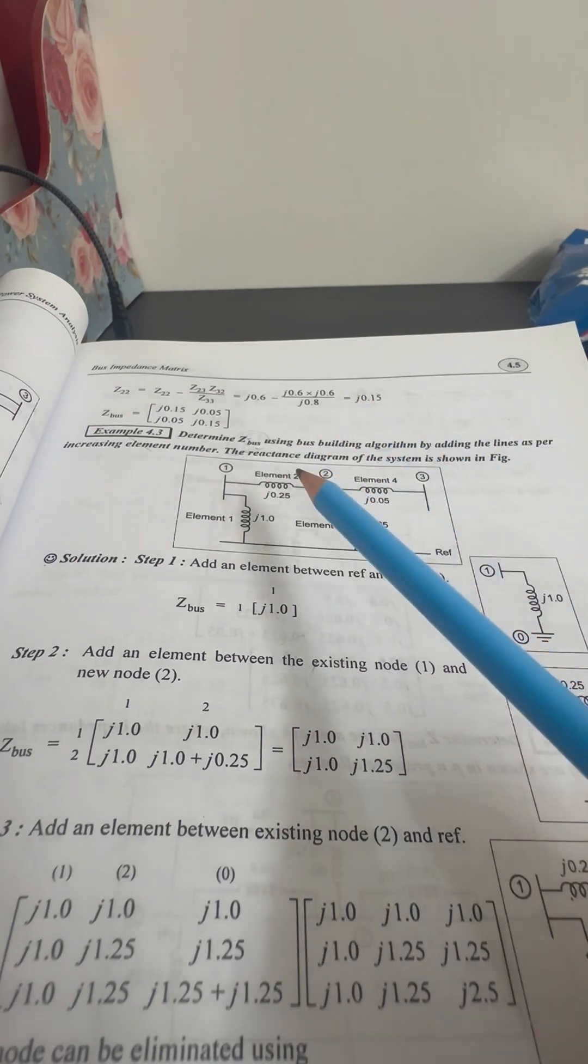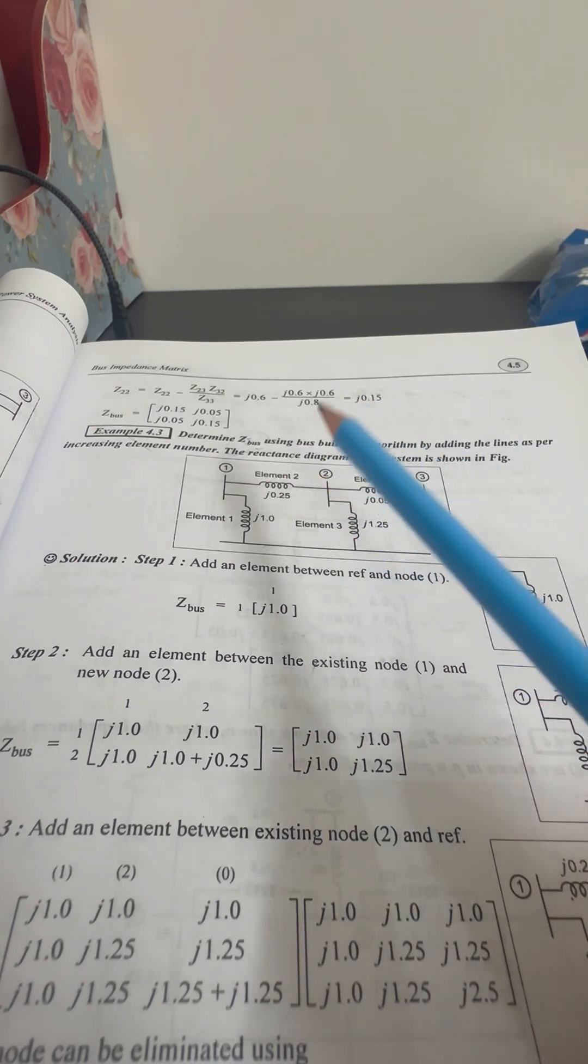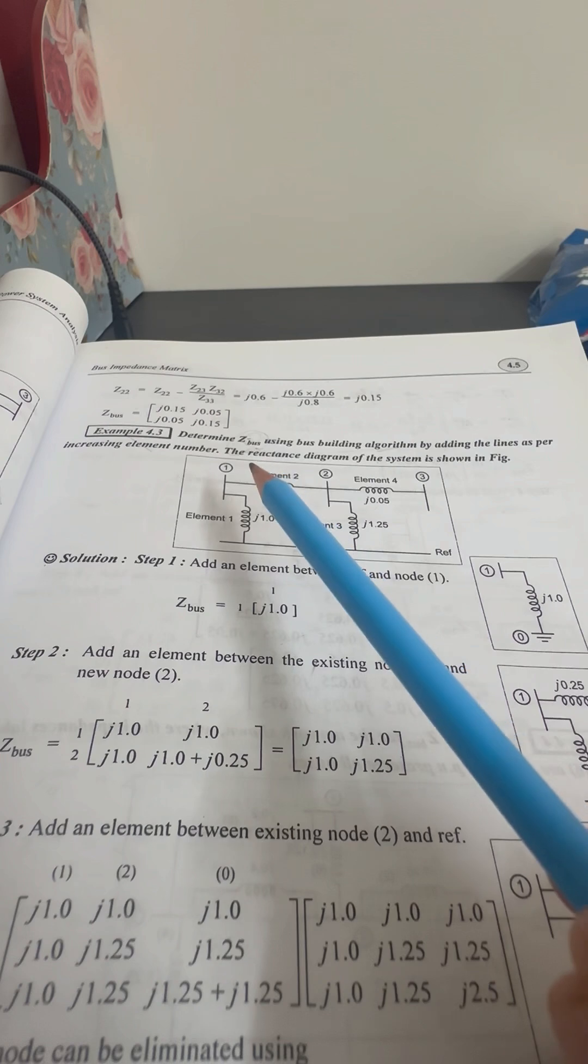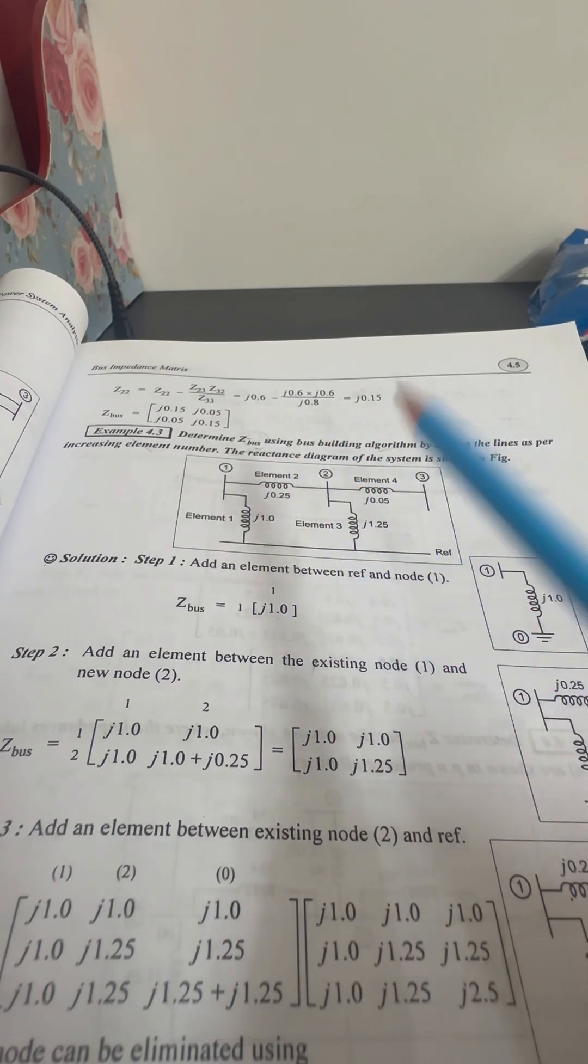How do we do this in the Bus Building algorithm? Either by the addition of a new Bus or the addition of a new line between the existing Buses. We can check this out.